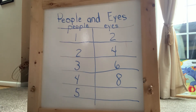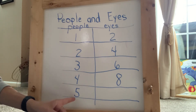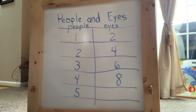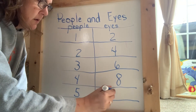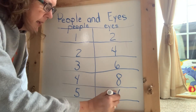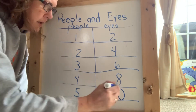Can you think about how many eyes I would have if there were five people altogether? Did you say ten? Because if you said ten, you were absolutely correct.